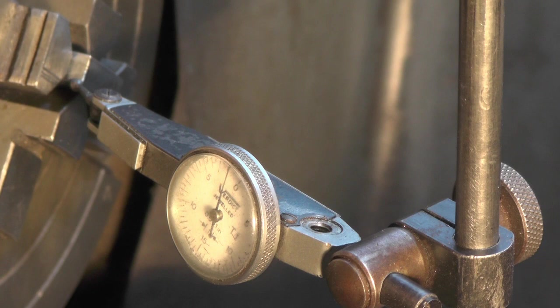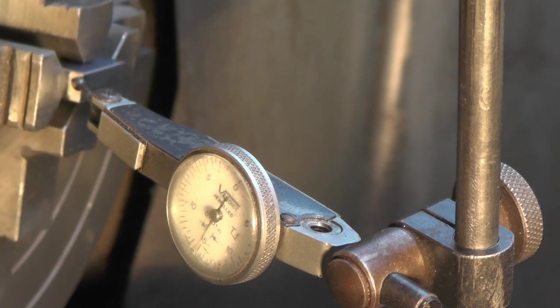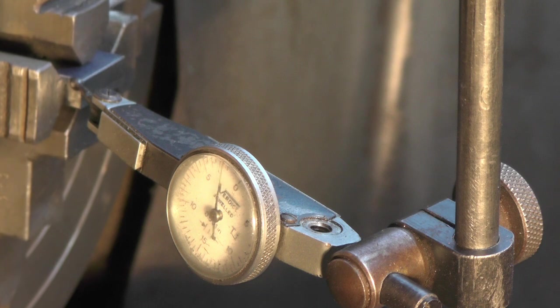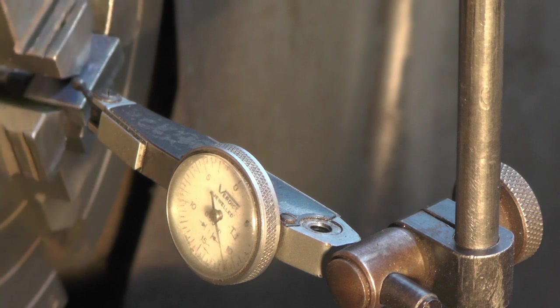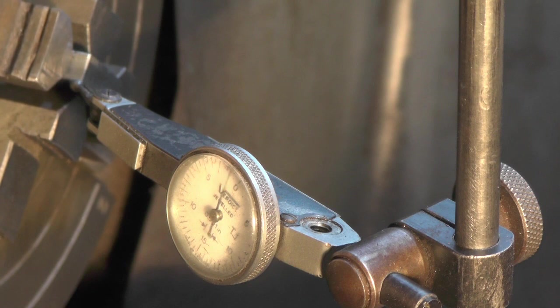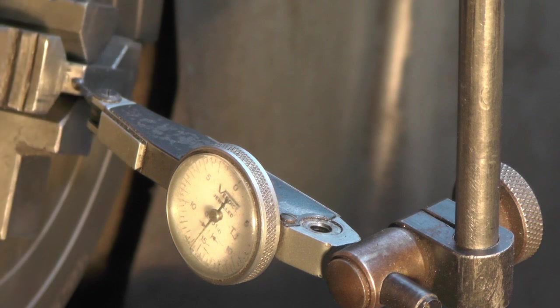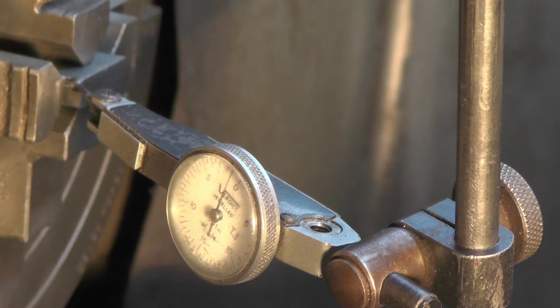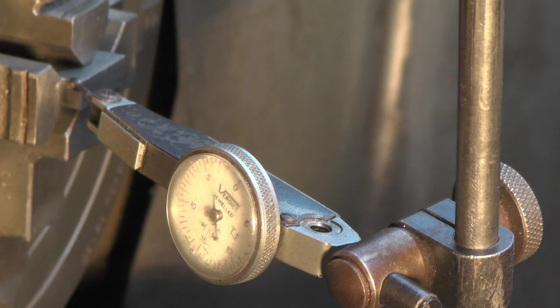Right, so if you can see the needle on my dial test indicator, that's reading minus two, minus one and a half, sorry, thousandths. Then on the next corner it's reading zero. Then on the opposite side corners, that's reading one thousandth, minus one thousandth, and the next corner is minus a half there.